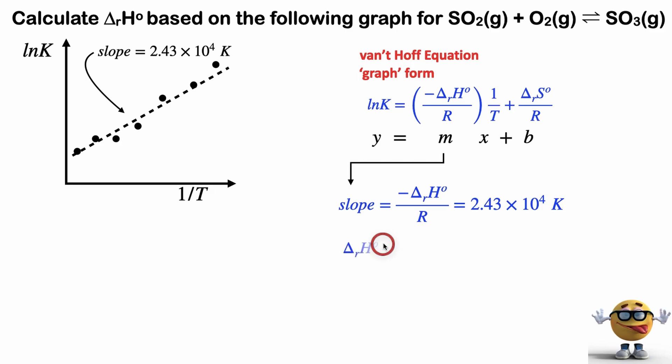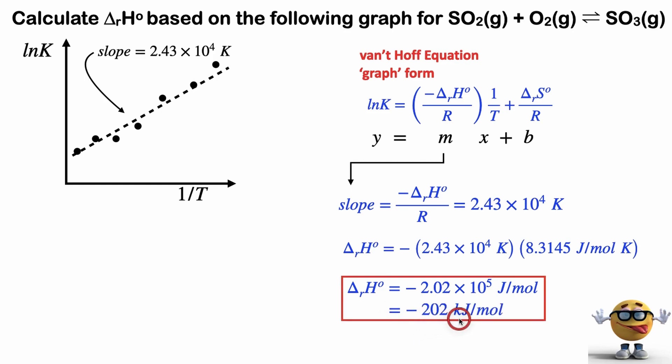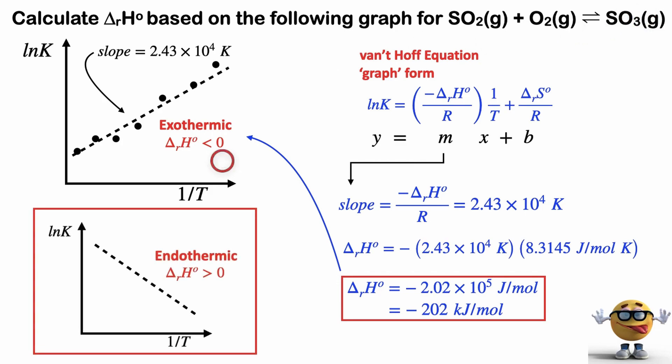So if we solve for the change in standard enthalpy, we just move the R over, use the R that has joules, plug in our numbers, and we're given a value of negative 2.02 times 10 to the 5 joules per mole or negative 202 kilojoules per mole. It's negative, which means the reaction is exothermic. So energy is being released as heat as the reaction proceeds to the right. An endothermic graph is when the slope goes the other way. So the delta H is going to be greater than zero.